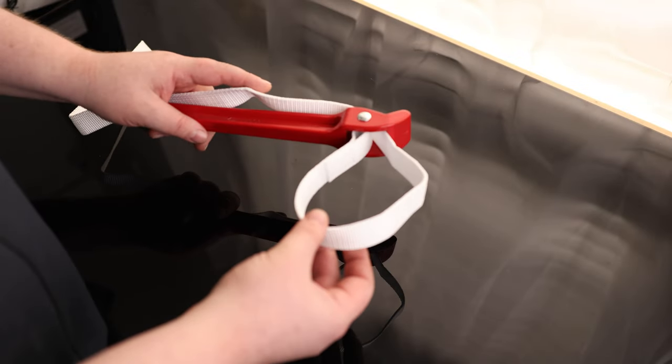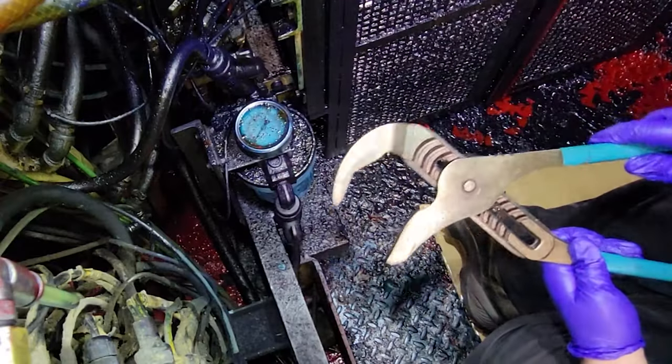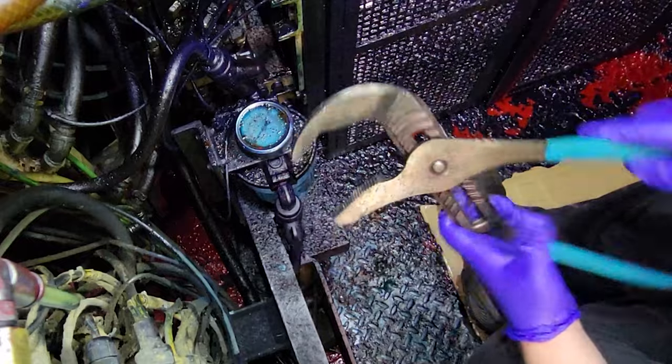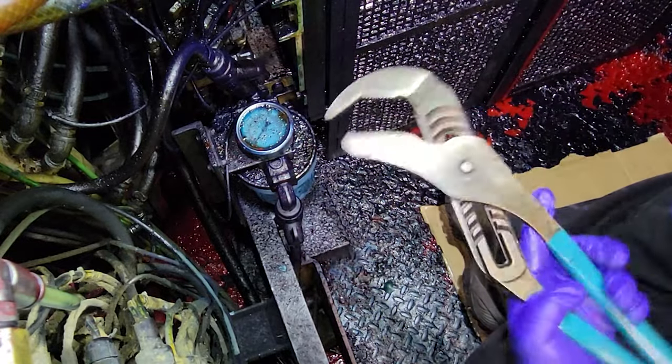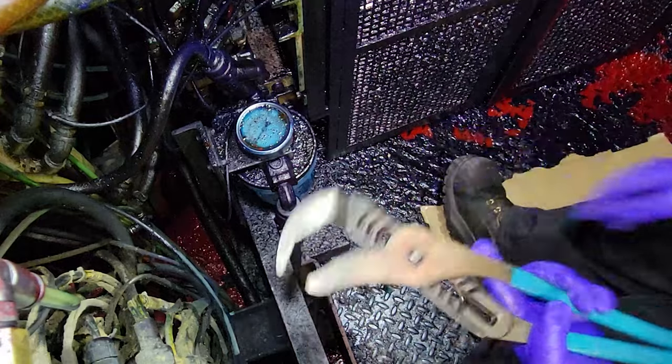This is a very non-destructive way of removing a filter housing. Quite often with these filters, people take channel locks—big old channel locks like this—and grab onto it to twist the filters off. The problem with that is these teeth dig into it and tear those things up.